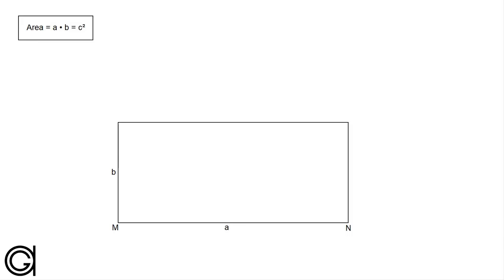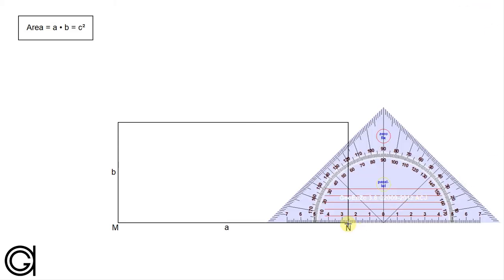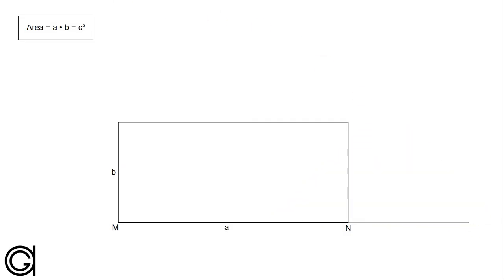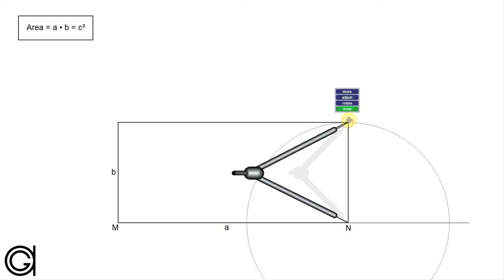We are going to name the two extreme points of the base m and n as can be seen here in the video. So the first step is to elongate the base a to the right, and setting our compass on point n to the length of the side of the rectangle b, we are going to scribe an arc to the right, transporting the length of the side onto the elongated line and forming a new point o.